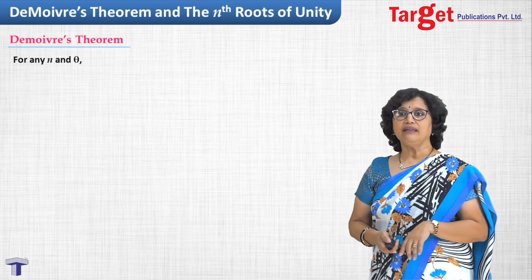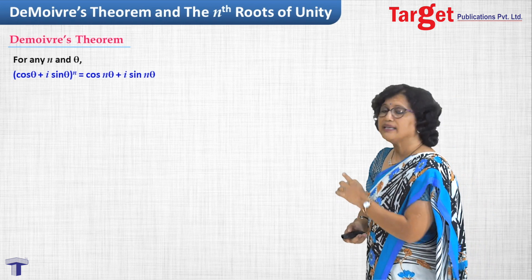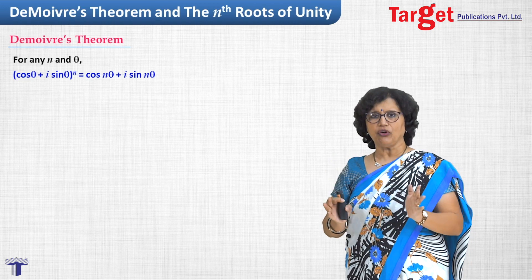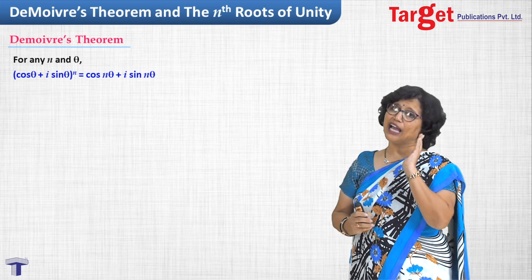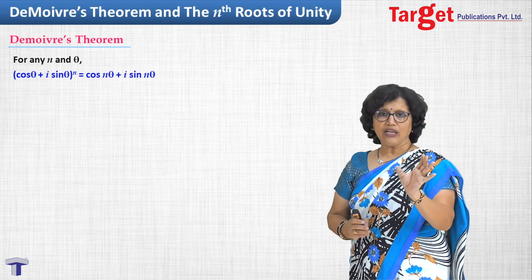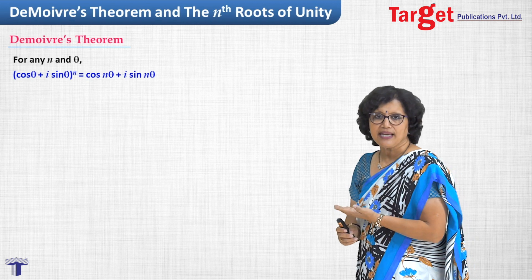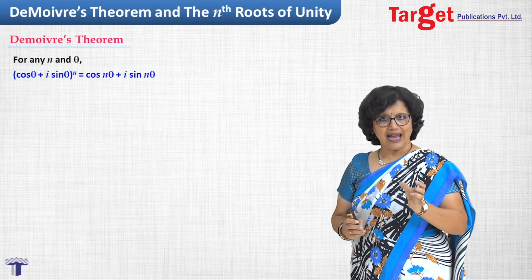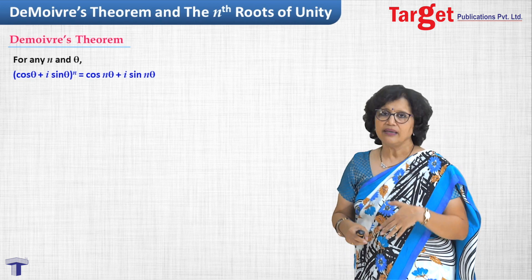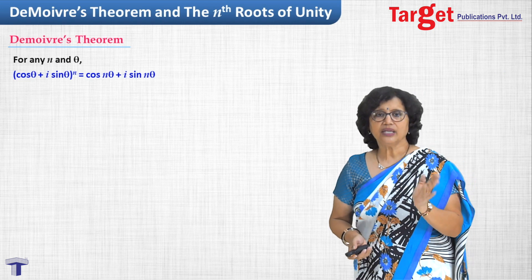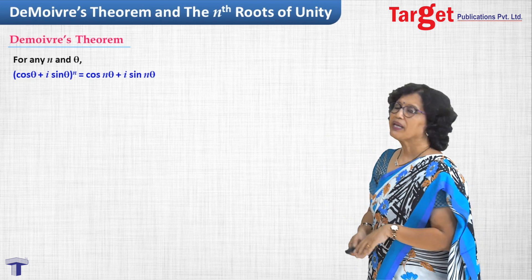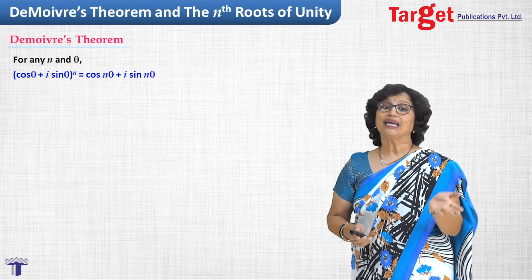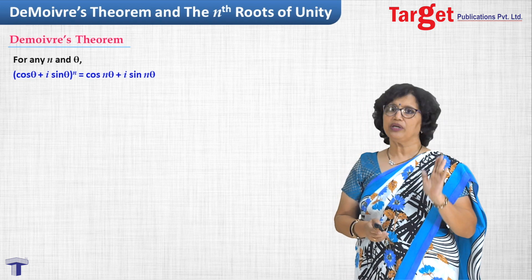The theorem states that for any n and theta, (cos theta + i sin theta) raised to n equals cos(n*theta) + i*sin(n*theta). I am not going into the proof, but those who are interested can prove it themselves. For example, take n equal to 2: (cos theta + i sin theta)(cos theta + i sin theta). We know how to multiply two complex numbers in polar form — arguments get added — so cos(2*theta) + i*sin(2*theta) is expected. From problem solving point of view, this replacement is what's important.